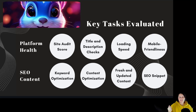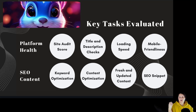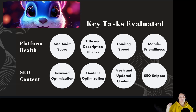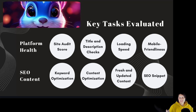Key tasks evaluated under Platform Health include: Site Audit Score — a comprehensive check to ensure overall website health, typically aiming above 70%, assessing technical SEO aspects, content quality, and user experience across the entire site. Title and description checks verify there are no empty or duplicate titles or descriptions, which are crucial for SEO and user engagement. Loading speed evaluates how fast your site loads, an important factor for both user experience and SEO rankings. Mobile friendliness checks if your website is optimized for mobile devices, as mobile usability is a significant ranking factor.